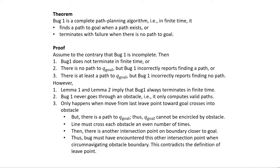So we can state the theorem: Bug 1 is a complete path planner. We prove this by contradiction. It would be incomplete if: it does not terminate in finite time; or if there is no path to Q_goal but Bug 1 still reports finding one; or if there is a path but it incorrectly reports failure. The first case — not terminating in finite time — is disproved by Lemmas 1 and 2.